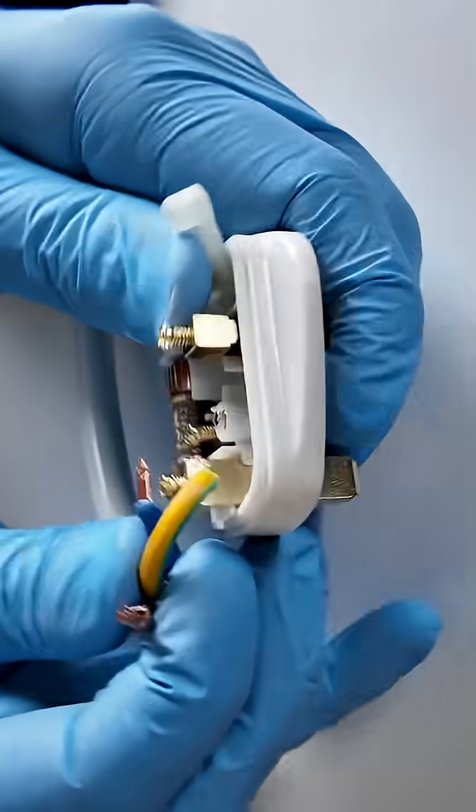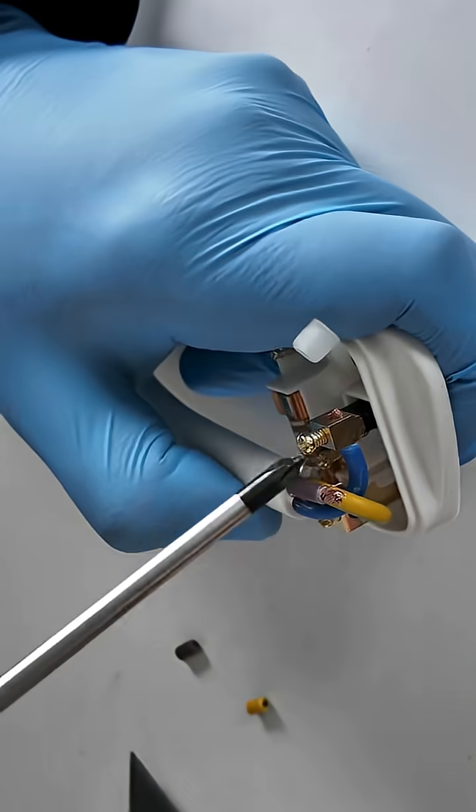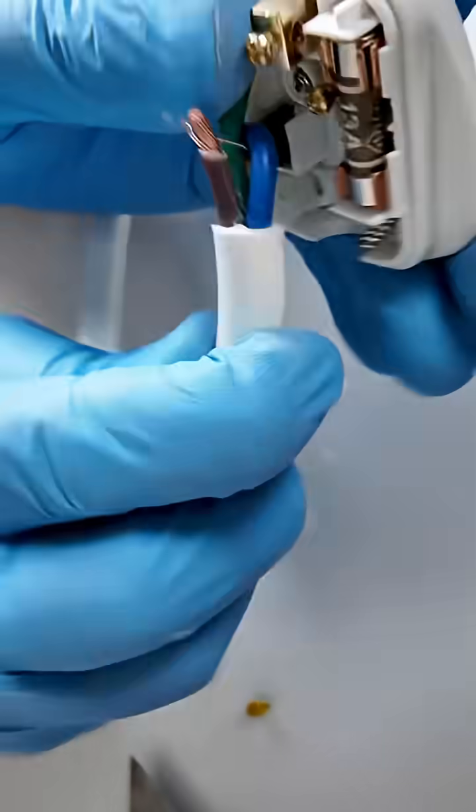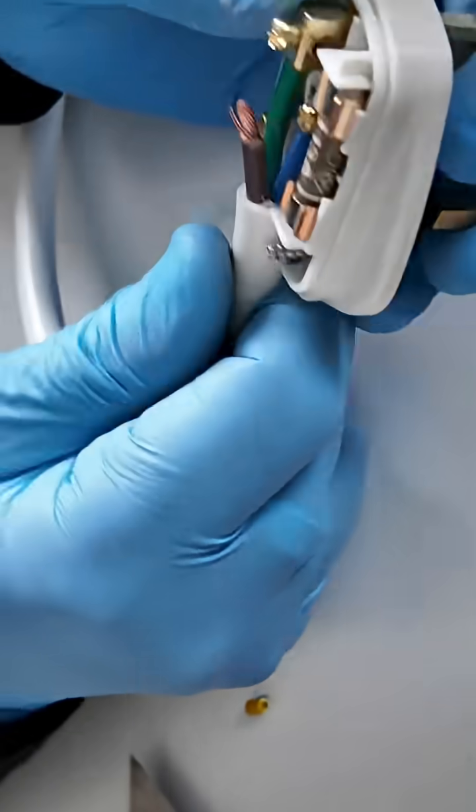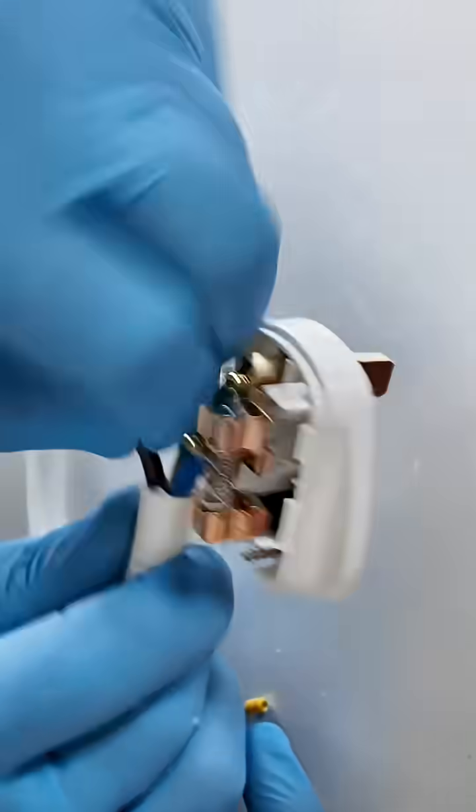Insert the wires: feed each wire into its terminal. Loosen the terminal screw, insert the twisted copper end fully, and tighten the screw securely.